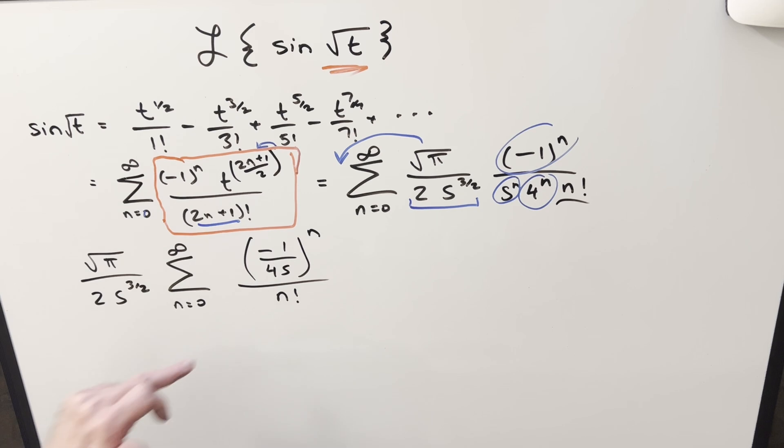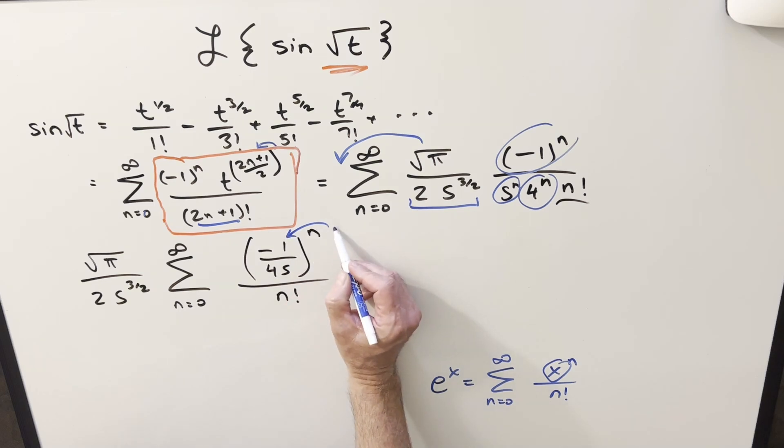And then at this point, we're close. But what we need to notice here is this right here is in exactly our form for the power series for just e to the x. Comparing this right here to our power series where the input in here is x, what I'm saying is this right here, this minus one over 4s, this is just going to be the x value.